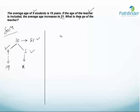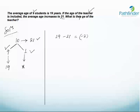What is the deviation on each of the 9 students? The deviation can be calculated as 19 minus 21, which is minus 2. This is the deviation on each of the 9 students. But because there are 9 students, the total deviation is minus 2 multiplied by 9, which gives us minus 18.